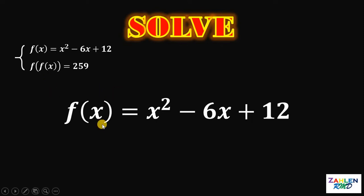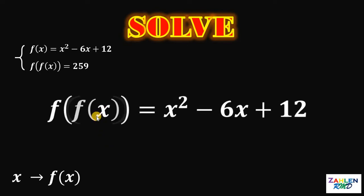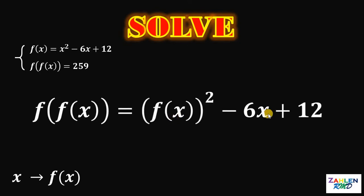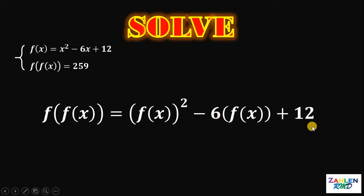One way to solve this is to replace all x with f of x. What I mean is, whenever we see x, we need to replace it by f of x. For example, this x becomes f of x, this x squared becomes f of x squared, and this x in 6x becomes f of x. So we have f of f of x equals f of x squared minus 6 times f of x plus 12.